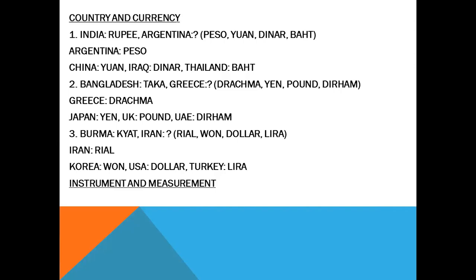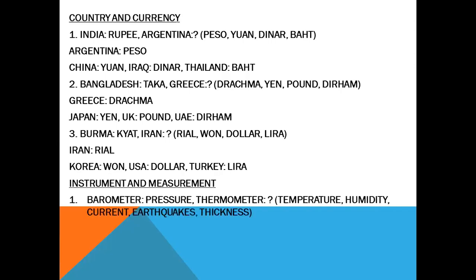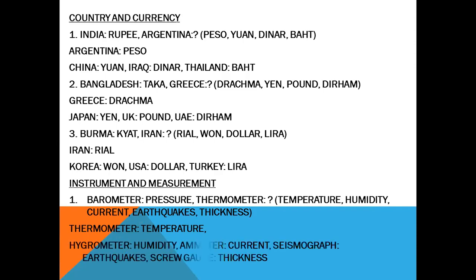Instrument and measurement. Barometer — pressure. Thermometer — what? Options: humidity, current, earthquake, thickness. Thermometer measures temperature. Hygrometer measures humidity. Ammeter measures current. Seismograph measures earthquakes. Screw gauge measures thickness.